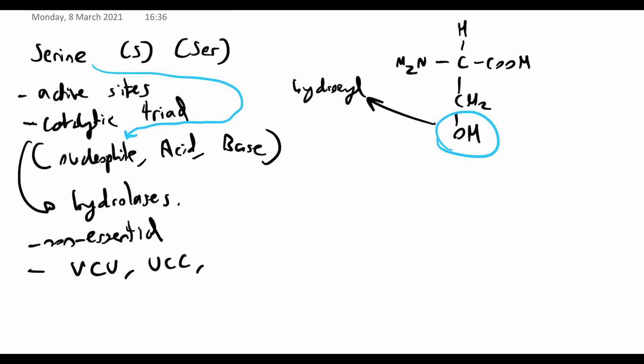You've got the UC codons which code for it, so UCU, UCC, UCA, and UCG. And you've also got two AG codons, which are AGU and AGC. So these all code for serine.